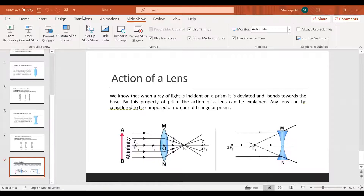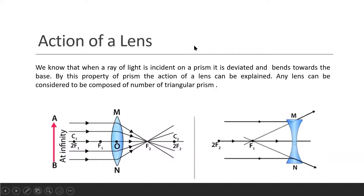Assalamu Alaikum teacher and dear friends. I'm Ritu, and I'm going to give a presentation on lens and the action of lens. A lens is a transparent medium bounded by two surfaces — one of them is spherical and the other is either spherical or plain. Lenses are made from materials such as glass or plastic, polished to a desired shape. Spherical lenses are of two types: convex lens, or converging lens, and concave lens, or diverging lens.